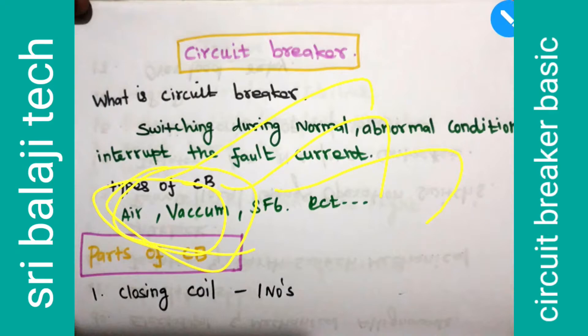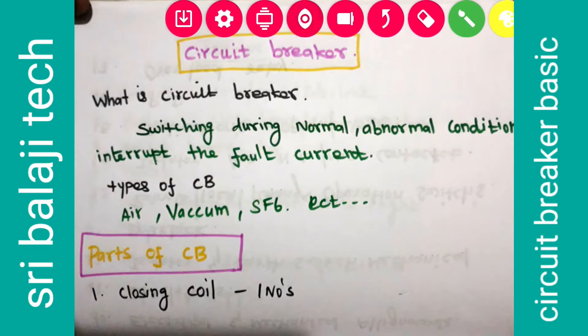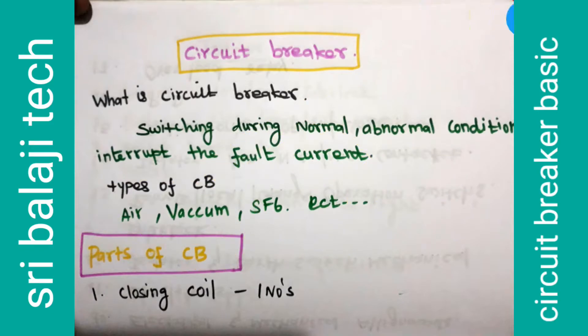You can use up to 11kV switchgear. SF6 is normal. Now, part one is part of the CB: closing.